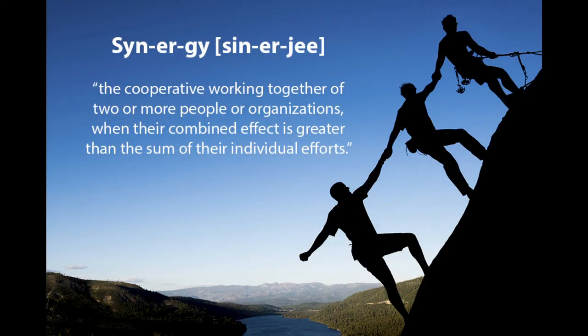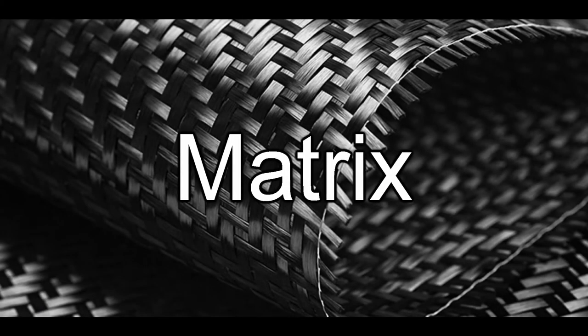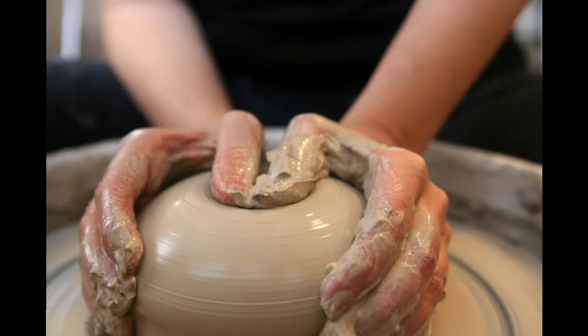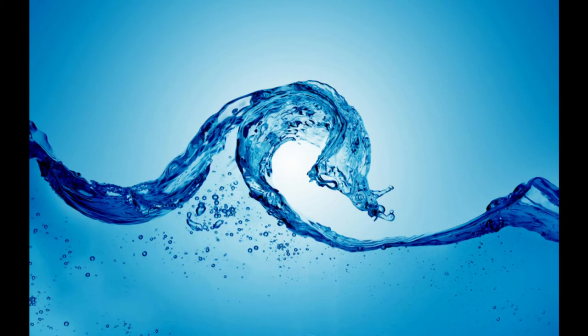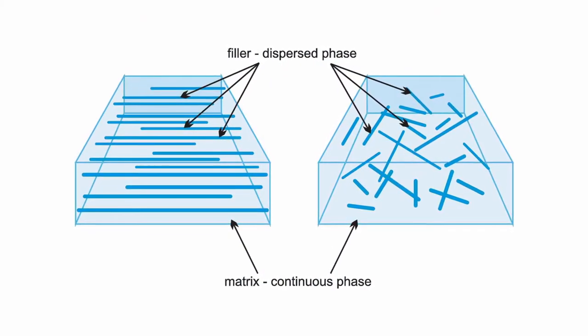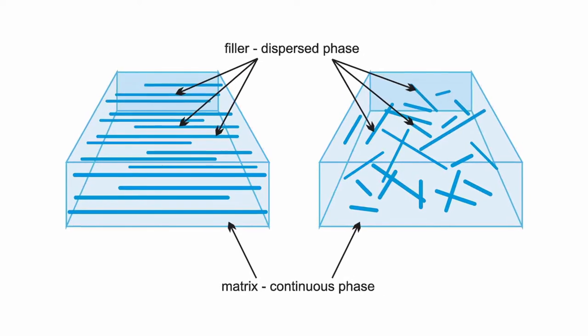So let's take a minute to go over the contributions of those two components. First, the matrix. One of the principal functions of the matrix is to give shape to the structure. That being the case, the most common matrix materials tend to flow and be formed easily and then hold their shape after the form is removed. The matrix is also the continuous phase of the composite, meaning that it will surround and cover the reinforcements.